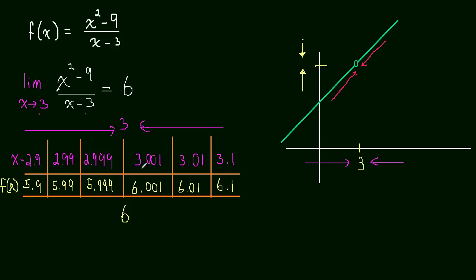You know, just based on our table, as x got closer and closer to 3, f of x got closer and closer to 6.